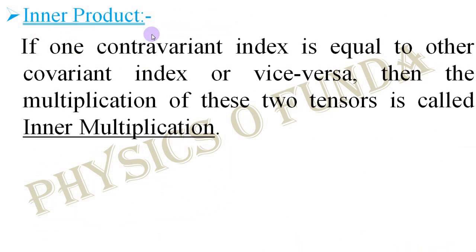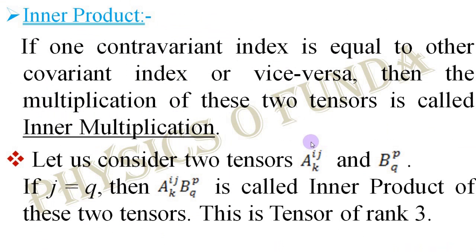Now we consider what is inner product. If we consider two tensors where a contravariant index of one is equal to a covariant index of the other, or vice versa, then the multiplication of these two tensors is called inner multiplication and the product is called inner product. If J, which is the contravariant index of tensor A, is equal to Q, which is a covariant index of tensor B, then this product is called the inner product of these two tensors. The rank of this tensor is 3. Interestingly, in the case of outer product we get rank 5, but in the case of inner product we get a tensor of rank 3.